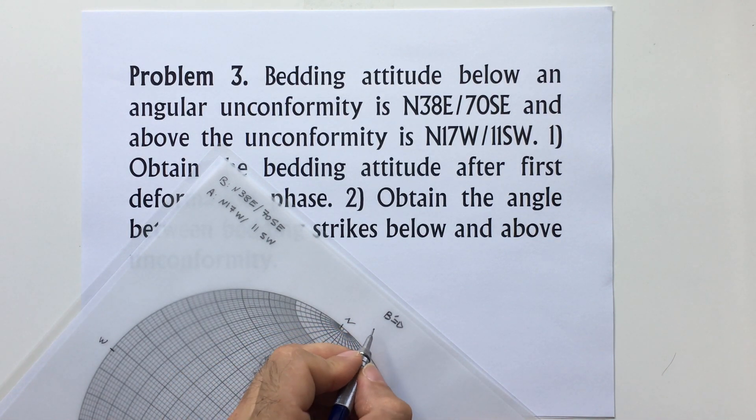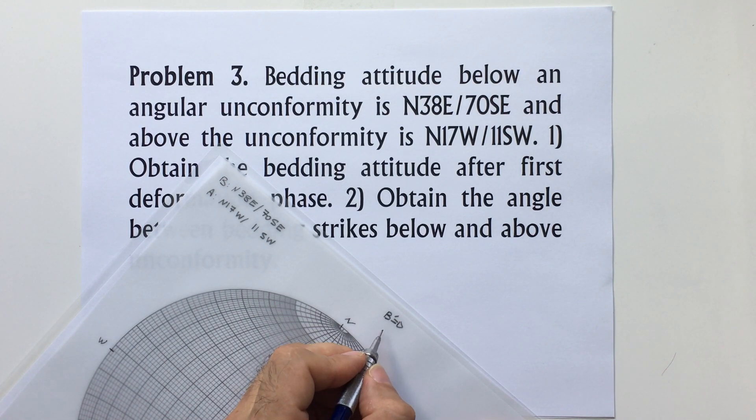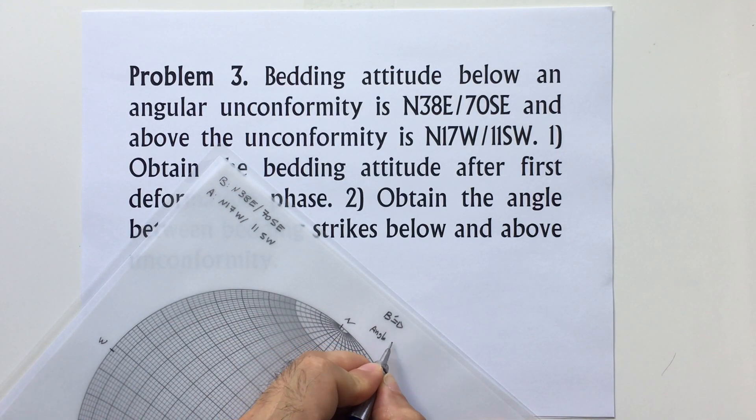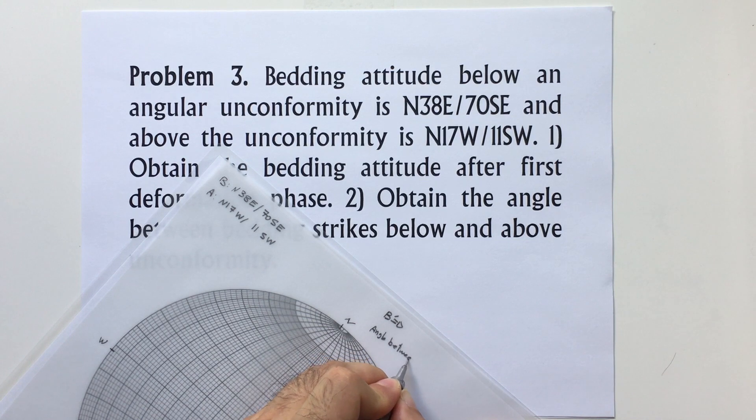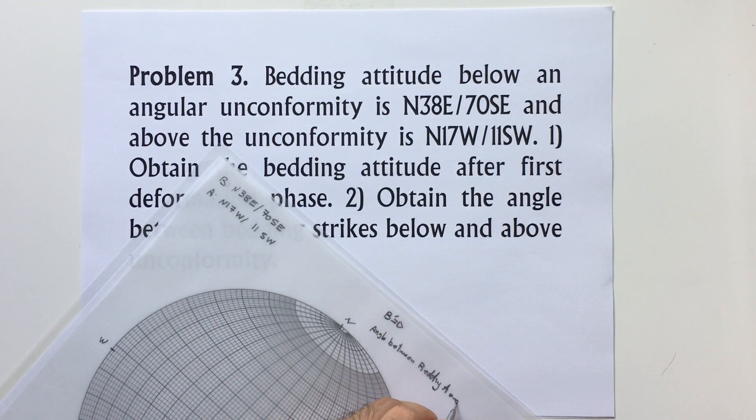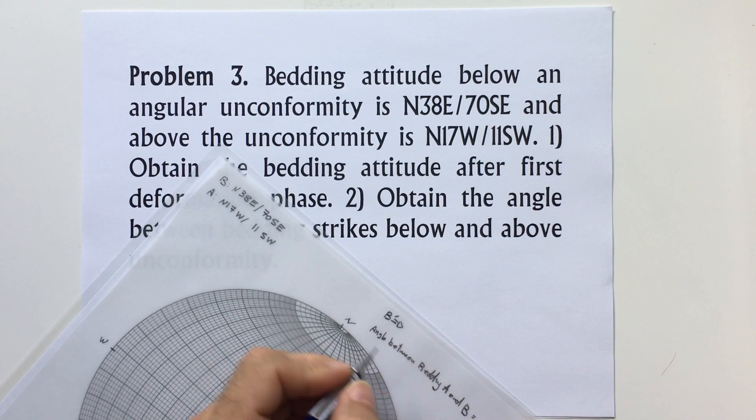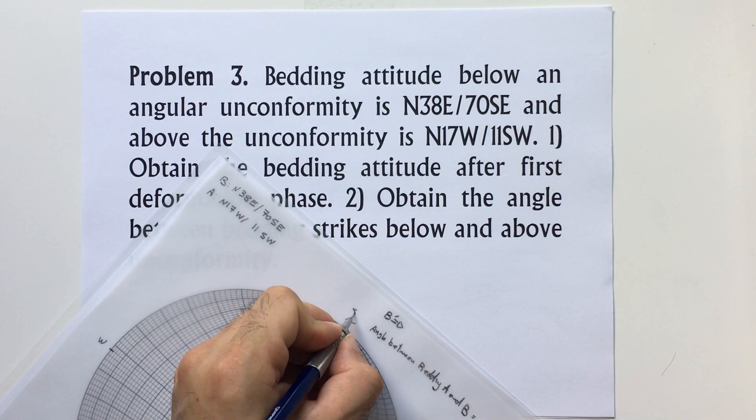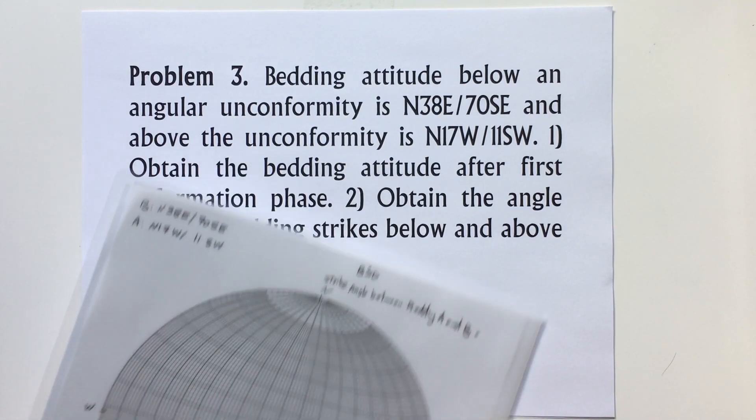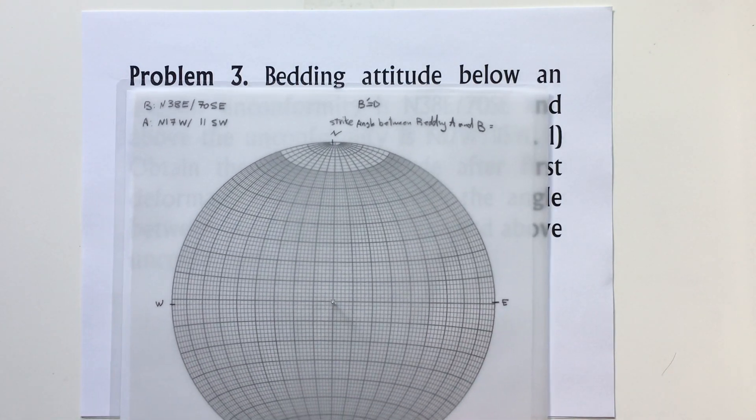And it's asking about the angle between A and B, the strike of above and below bedding A and B striking. So let's plot the bedding traces.